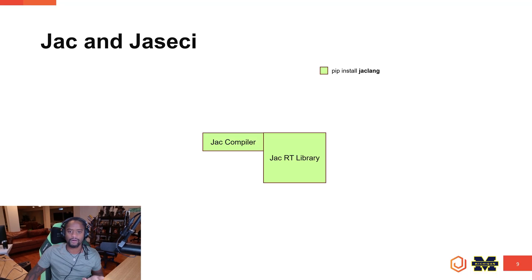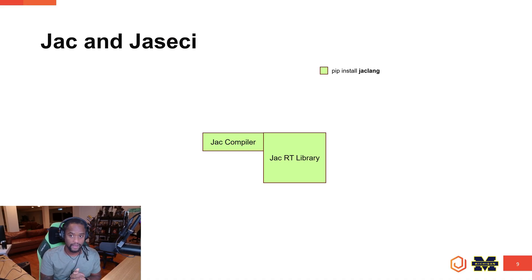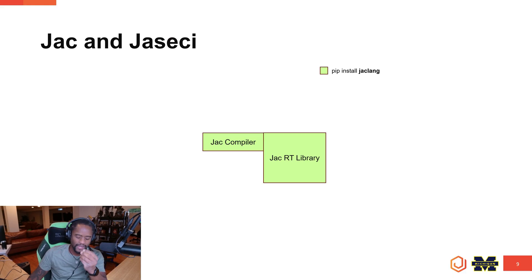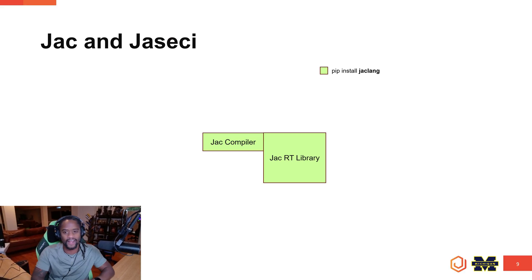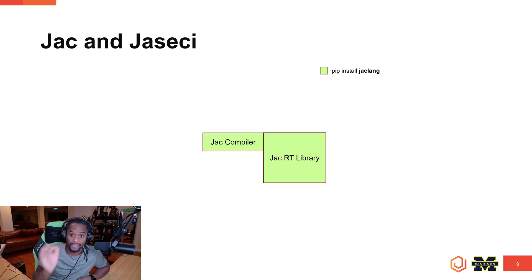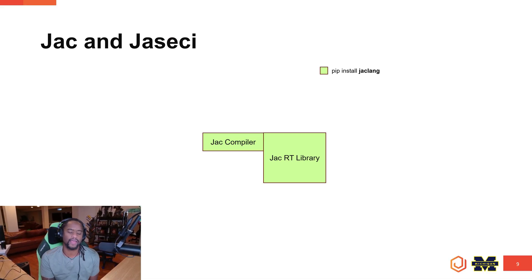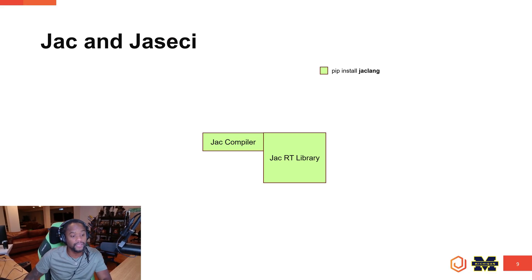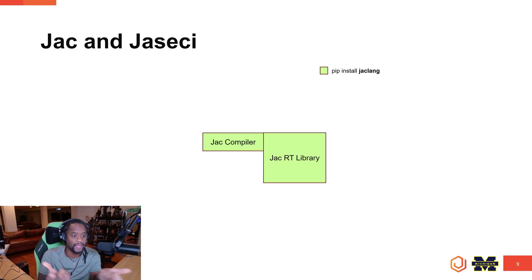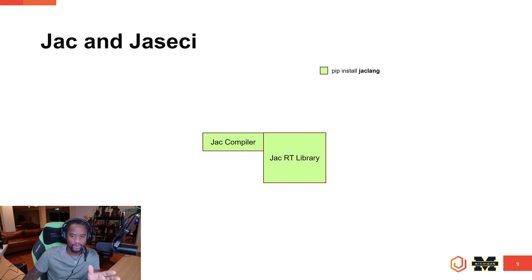This is the core of everything - it's a simple pip install. And this is pip install jacklang today. What you get from that pip install is a compiler and a runtime library. It's pure Python, so it runs on top of the Python VM. There are actually no dependencies in it. If you look at the project.toml, it's pure code - I vendored just a little bit of stuff to make it non-dependent.